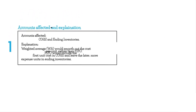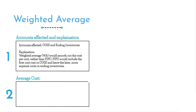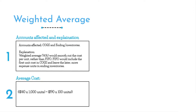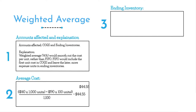Under weighted average, we calculate average cost as: ($40 × 1,000 units) plus ($90 × 100 units), divided by the total of 1,100 units. This gives a weighted average cost of $44.55. Ending inventory is then that average cost of $44.55 multiplied by the 50 units remaining in ending inventory, giving us $2,227.50.